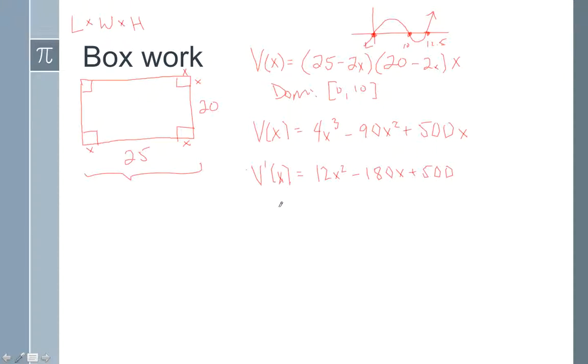We would need to do the quadratic formula. Through the quadratic formula, you would get x is approximately equal to 3.68 and 11.32. Well, there's a problem. The domain is from 0 to 10. Since this is outside of the domain, it's not going to be used. If we did the endpoints of 0 and 10, your volume would both be 0. So the only point that we're going to try here to figure out what is the max volume is 3.68.